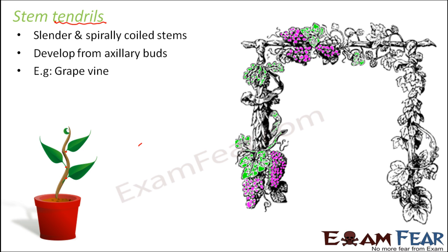Roots are also modified to form climbing structures, as we saw when talking about the different modifications of roots — roots are used for providing mechanical support or as climbing roots. Similarly, stems are also modified to form climbing stems or climbers. In grapevine it is the stem which is modified to form a climber, whereas in some other plants the roots secrete substances that help the plant climb on surfaces. One example where roots act as climbers is the betel leaf.